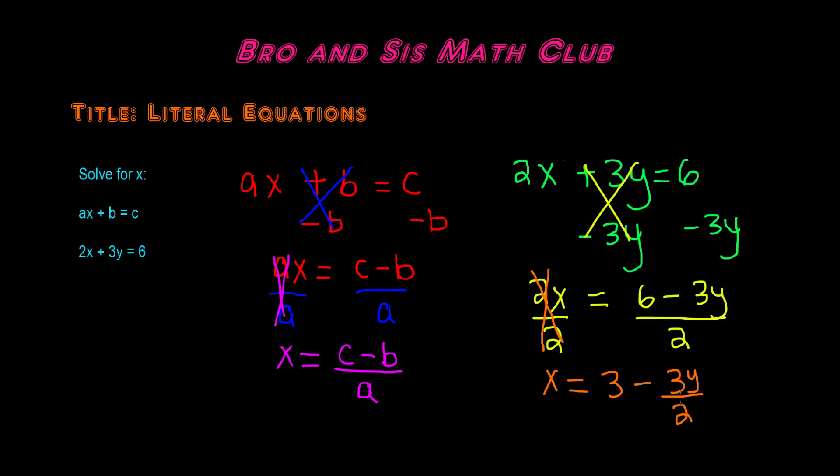So this is how you solve literal equations and as I said, it's really simple because you're just trying to solve for one variable. Remember, you're not trying to find the value of the variable, you're just trying to isolate that variable. So undo anything that's being done to that variable and you will have your solution.